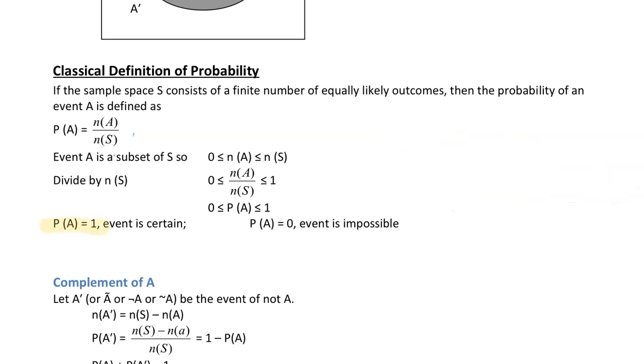If the probability of an event A is 1, then the event is certain. If the probability of an event A is 0, then the event A is impossible.